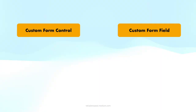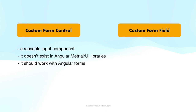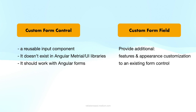To decide whether you need to implement a new custom form control or a new custom form field, consider the following. If you need to create a reusable input component that doesn't exist in Angular Material or other UI libraries, and you want this component to work with Angular forms, you need to implement a custom form control. If you want to provide additional features and appearance customization to an existing form control — whether custom or built-in — you need to create a custom form field. In many cases, you will implement a custom form control first, and then wrap it in a custom form field for extra features and appearance customization.